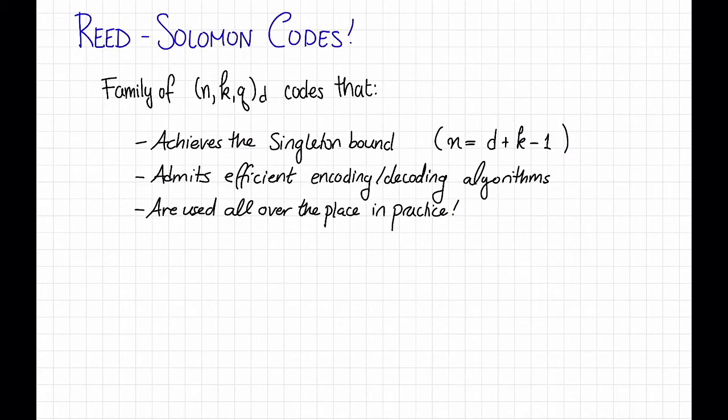So Reed Solomon codes are a family of N,K,Q,D codes that first achieve the singleton bound. That is, N is exactly equal to D plus K minus 1. They admit efficient encoding and decoding algorithms, and because of these things, they are used all over the place in practice.